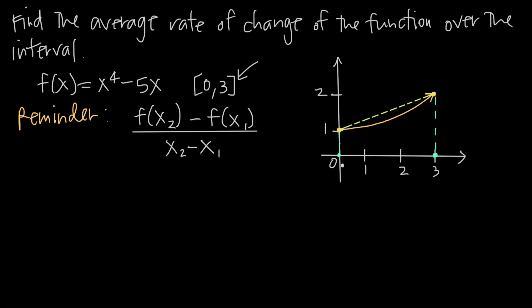At the left-hand side of the interval at x equals 0, we can see that the function's value is 1. On the right-hand side at x equals 3, we can see that the function's value is about 2 — if we come over to the y-axis, it's about 2. So in order to find the average rate of change, we take the value of the function from the right endpoint, which is 2, and subtract the function's value from the left endpoint, which is 1.